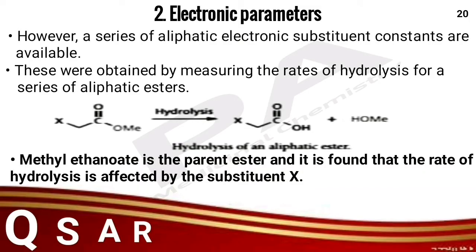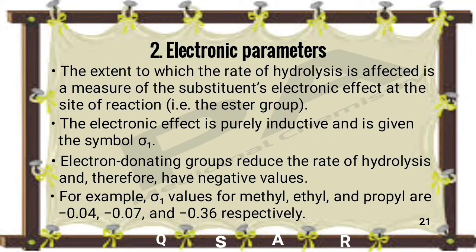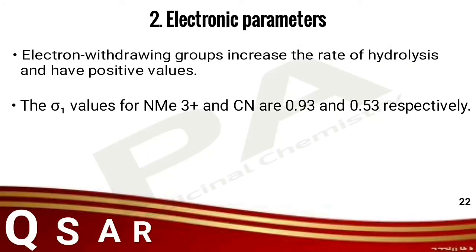However, a series of aliphatic electronic substituent constants are available, obtained by measuring the rate of hydrolysis for a series of aliphatic esters. The methyl ester is the parent ester, and the rate of hydrolysis is affected by the substituent. The electronic effect here is purely inductive and is given the symbol sigma-I. Electron-donating groups reduce the rate of hydrolysis and have negative values: methyl, ethyl, and propyl have sigma-I values of minus 0.04, minus 0.07, and minus 0.36 respectively. Electron-withdrawing groups increase the rate of hydrolysis and have positive values: NMe3+ and CN have sigma-I values of 0.93 and 0.53 respectively.